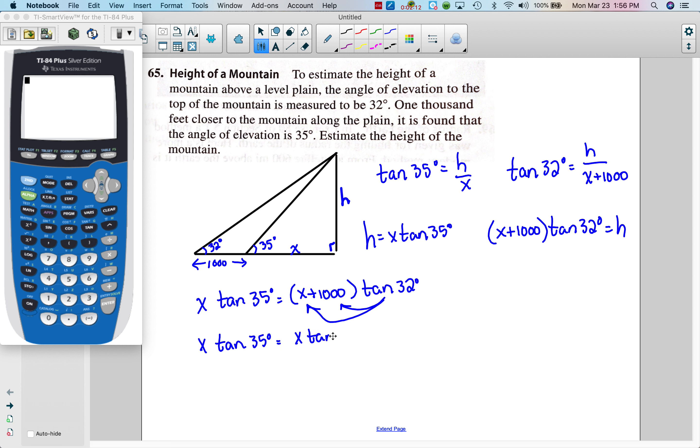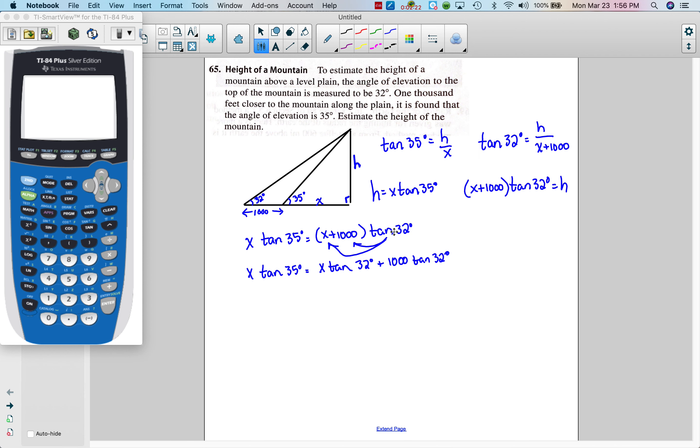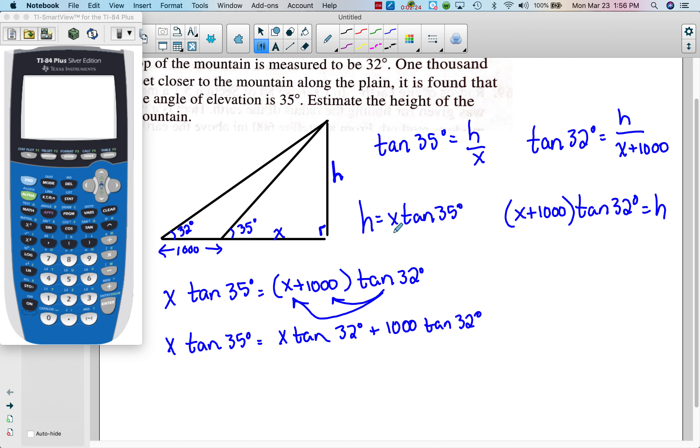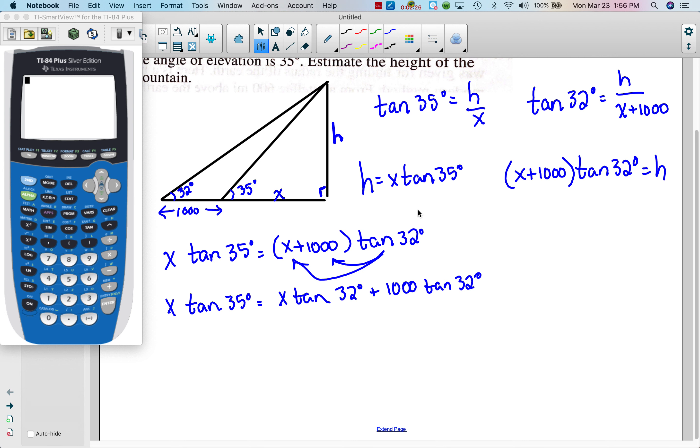So starting with distributing, we get X tangent 32 degrees plus a thousand tangent 32.